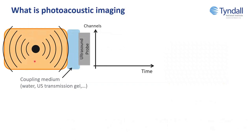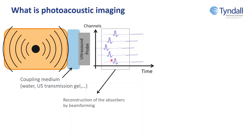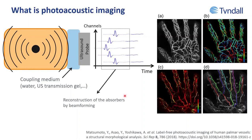If you can detect that wave, you can recover information about the object that actually absorbed the light. How it's usually done: you have your piece of tissue with an absorber that emits ultrasound waves, then you have a coupling medium and place an ultrasound probe. Depending on the channel on your probe, you detect pulses at different times. Using a technique called a beamforming algorithm — which does time-of-flight analysis — if you know the speed of sound, you know how long it took to travel and can reconstruct where the absorber was. This technique has been developed widely over the past 20 years, and now there are some incredible images.